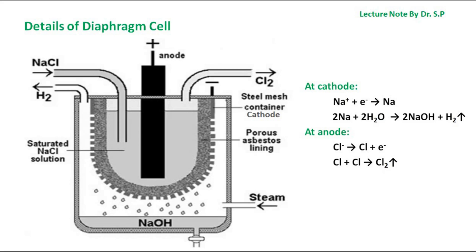The anode consists of a graphite rod dipping in sodium chloride solution — that is, saturated brine solution — and is separated from the cathode by the asbestos lining, as shown in the figure. On passing the current, chlorine is evolved at the anode and is let off.